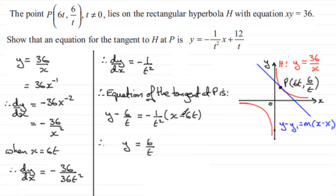Expanding this bracket gives minus 1 over t squared x, then plus 6 over t plus another 6 over t. When I tidy this up, I have minus 1 over t squared x, and 6 over t plus 6 over t is 12 over t. That's what we had to show.